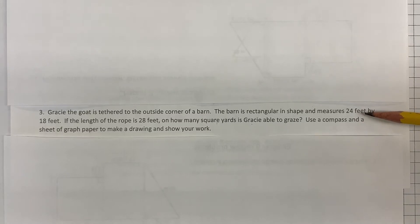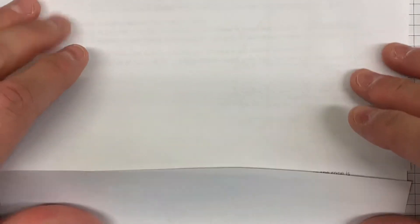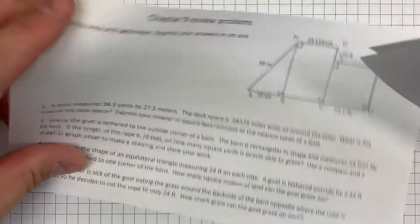Notice that the barn dimensions are given in feet and it asks at the end for how many square yards she's able to graze. So based on that, we're going to need to do some conversions at the end probably. Use a compass and a sheet of graph paper to make a drawing and show your work. So we'll start by getting our graph paper ready here. Here's our page.